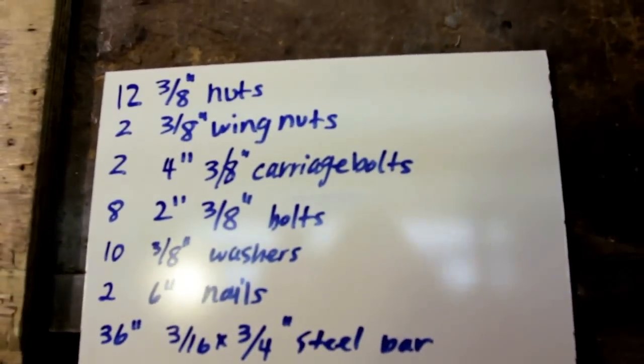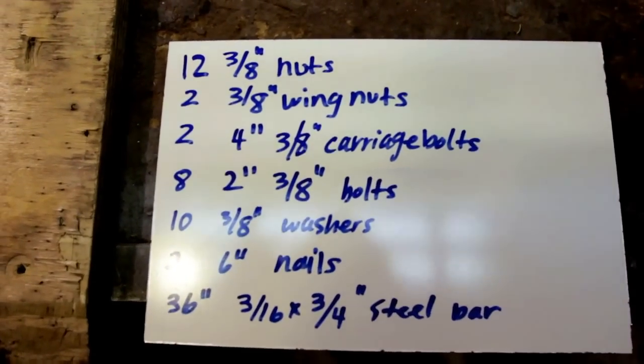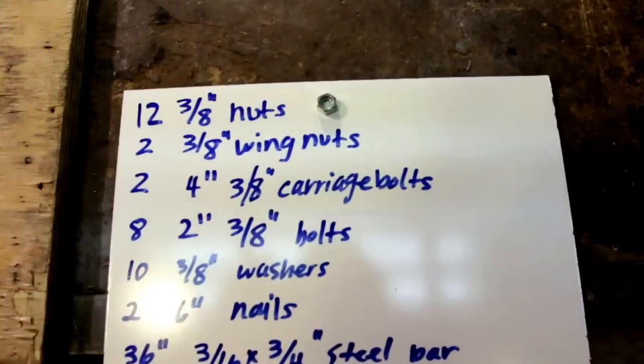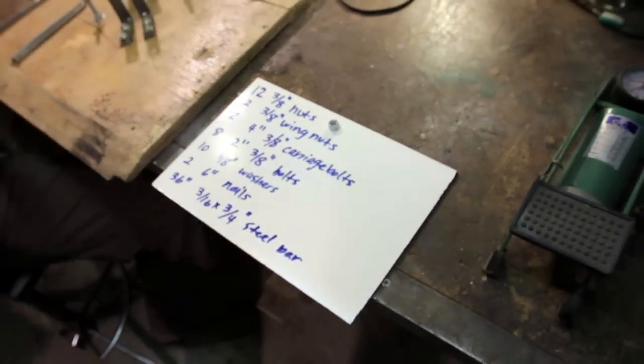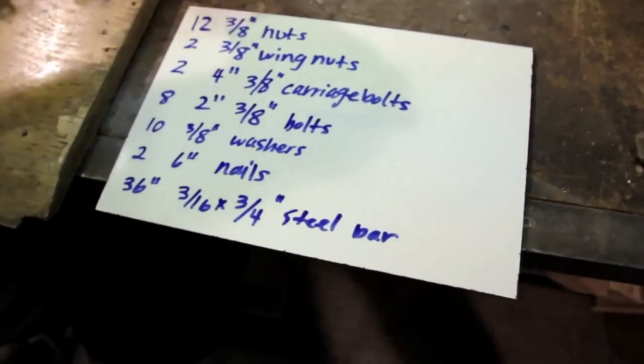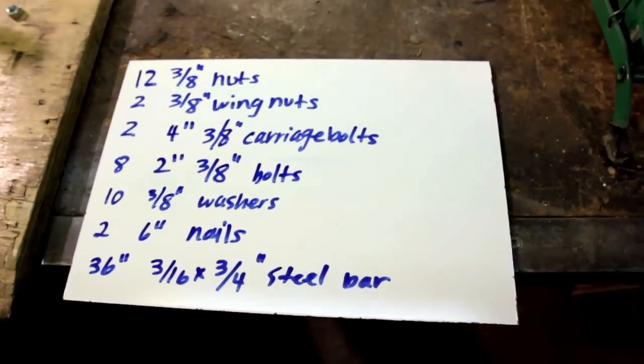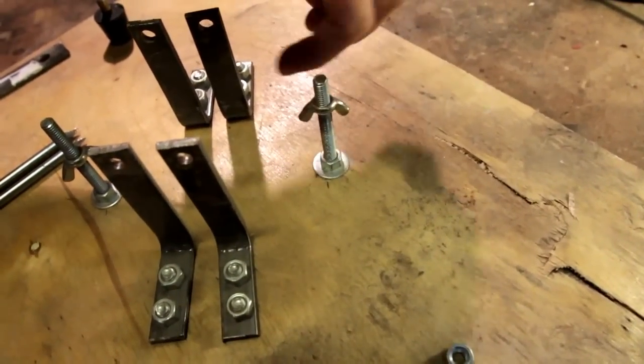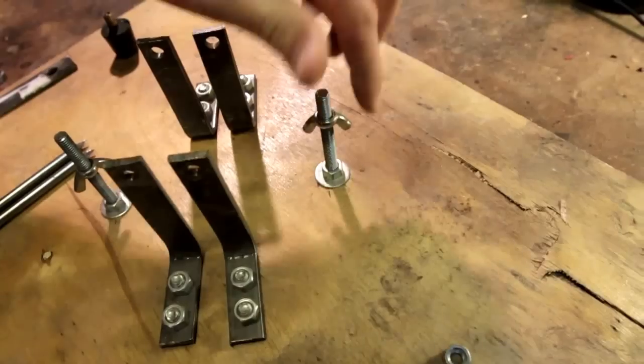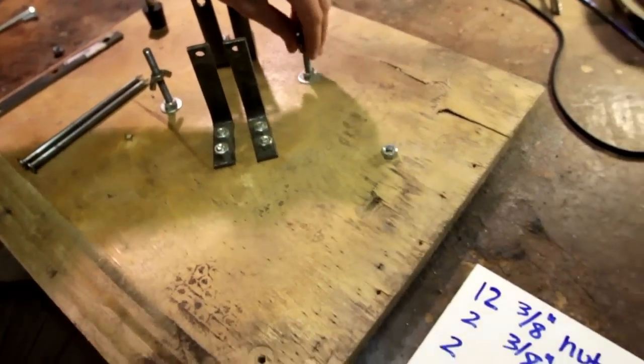You're going to need 12 3/8 inch nuts. That's what those look like. And you're going to need 12 of those. Then you're going to need 2 3/8 inch wing nuts. And that's what these are here. These little guys that spin like that. So, just make sure all the sizes of all the bolts and all the nuts are all the same. That's the important part. But you're going to need two of those.